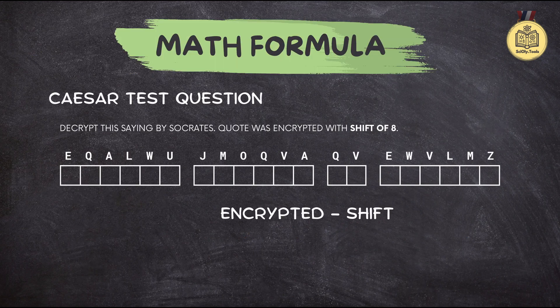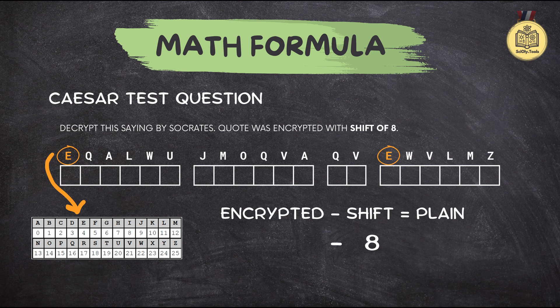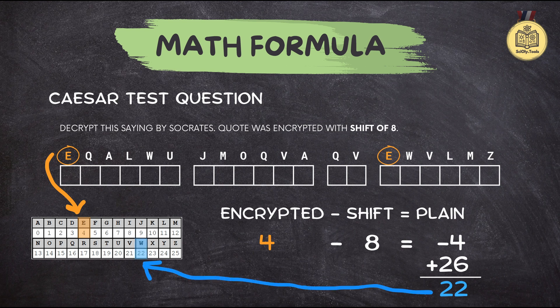Let's decode a Socrates quote with a shift of 8. Our reference table tells us E is the number 4. Subtract the shift of 8 and we get negative 4. Since we're working with the alphabet, think of it like a circle — we add 26 to get back to our letter values. So negative 4 plus 26 equals 22, and 22 gives us the letter W. Next, Q is the number 16; 16 minus 8 equals 8, and number 8 is I. So far we have WI.